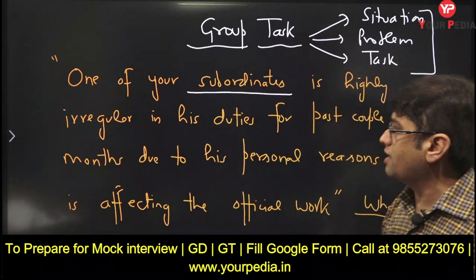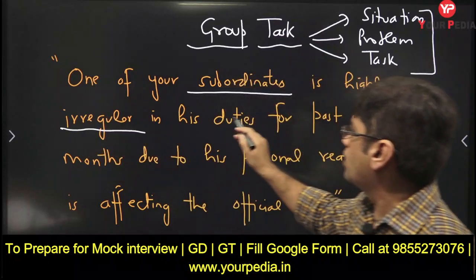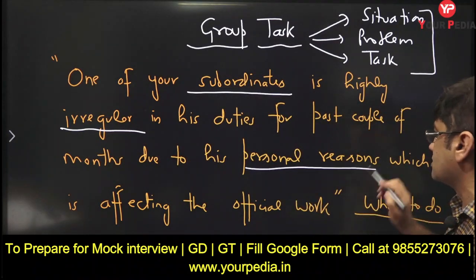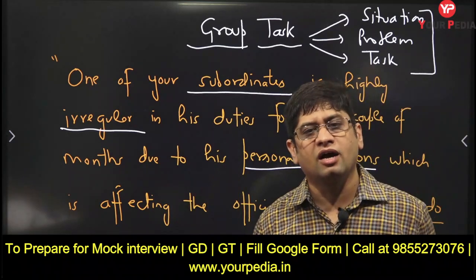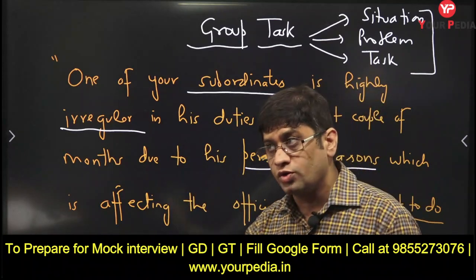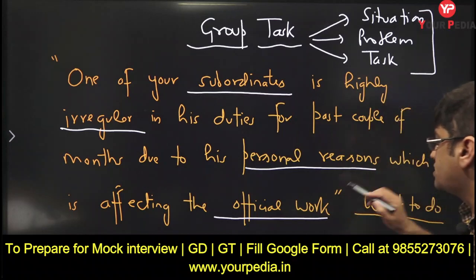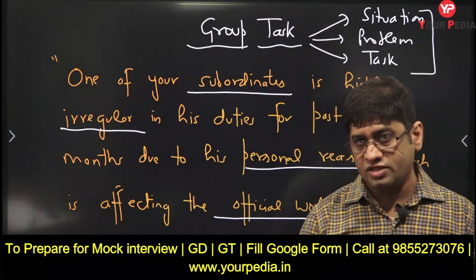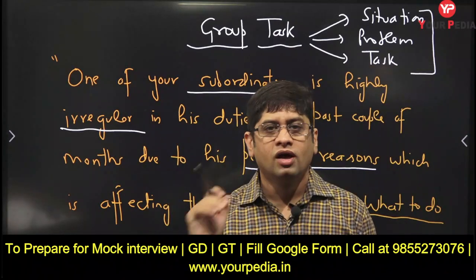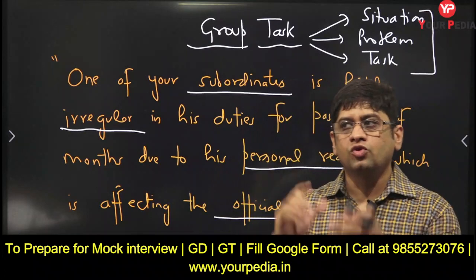So the next task is: you are a boss and one of your subordinates has started missing his duties. He is irregular in his duties for the past couple of months due to personal reasons. He's not doing his duties properly for personal reasons, and it is affecting the official work. What will you do? What strategy will you follow? How will you proceed forward? Is the task clear?